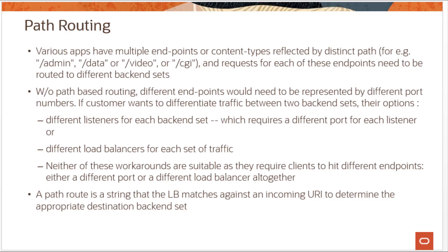Next, let's look at path routing. Some applications have multiple endpoints or content types, each distinguished by a unique URI path — for example, /admin, /data, /video, or /cgi. You can use path route rules to route traffic to the correct backend set without using multiple listeners or load balancers. A path route is a string that the load balancing service matches against an incoming URI to determine the appropriate destination backend set. You cannot use asterisks or regular expressions in path route strings, and path route string matching is case insensitive.